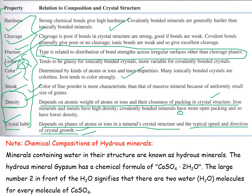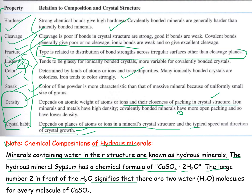We also have different types of minerals according to chemical composition — the hydrous minerals. Minerals containing water in their structure are known as hydrous minerals. For example, gypsum has a chemical formula of CaSO₄·2H₂O, so there is a water molecule in this mineral. The number 2 in front of 2H₂O signifies that there are two water molecules for every molecule of calcium sulfate.